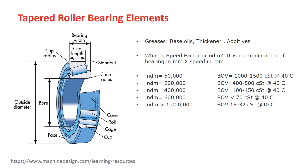Every tapered roller bearing has common components such as the cone, which we identify by its bore diameter, the cup, which we identify by its outside diameter and thickness or width, as well as the cage or separator and rolls.